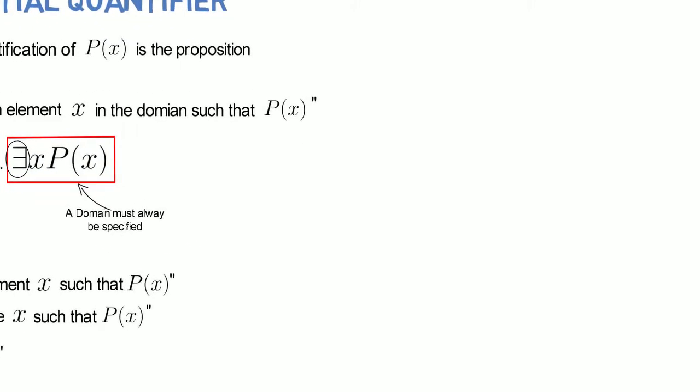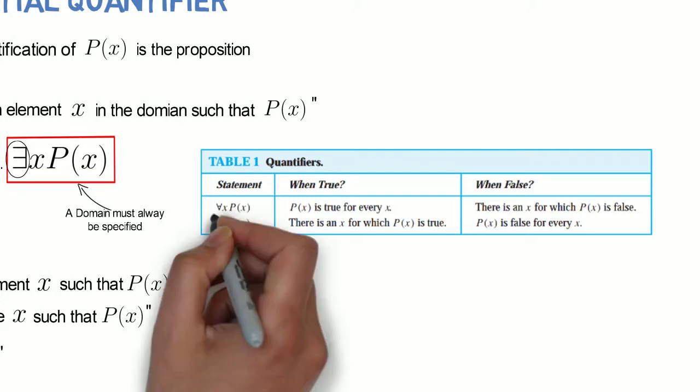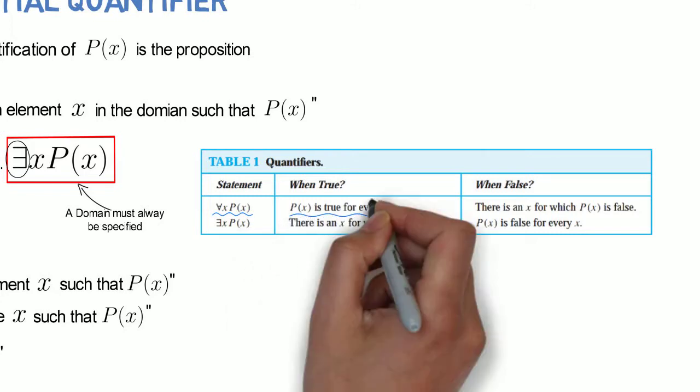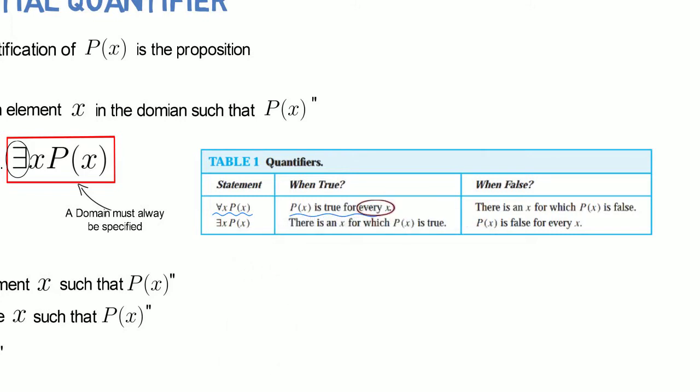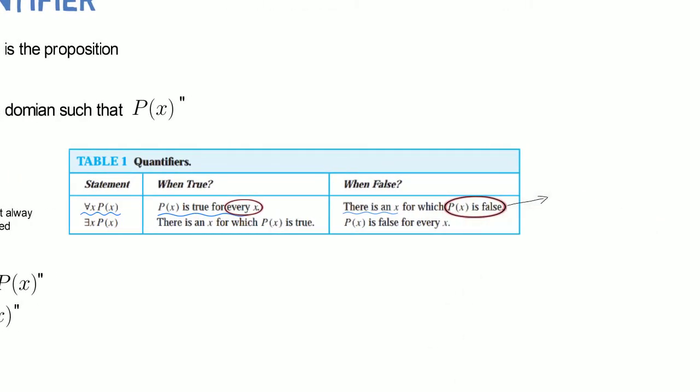Let's see how this is different compared to the universal quantifier. As we've seen earlier, a statement with the universal quantifier is true when P(x) is true for every x. If there is one, just one x, in the domain for which P(x) is false, the entire statement is false.